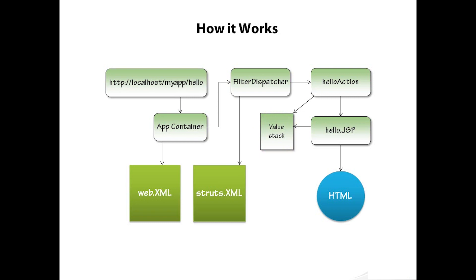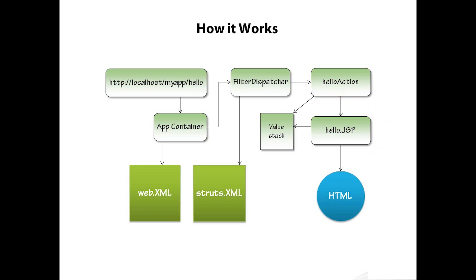Finally, that hello action is going to be mapped in the struts.xml file to some kind of result. There are other ways of mapping this besides struts.xml — we can use convention-based mapping as well. The basic idea is that the action is mapped to a particular result. In this case, let's say our hello.jsp file is what's going to be used to render that result. It might get its data from the value stack — whatever hello action left there — to be rendered by the view as HTML. There are a lot of pieces here where we could plug different things in or swap out different components.